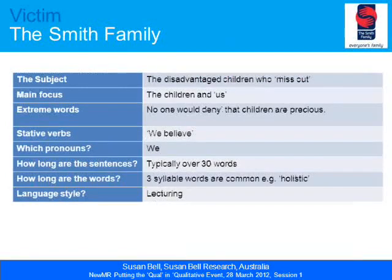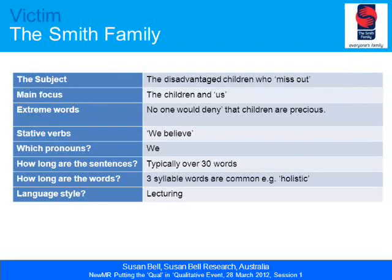To summarise the variables for the Smith family: their subject was the disadvantaged children who miss out; their main focus was the children and us; extreme words included phrases like 'no one would deny' that children are precious. They used stative or static verbs, talked about 'we,' and had quite long words and sentences in a kind of lecturing style. So: do all websites interact with us like this? The answer is no.